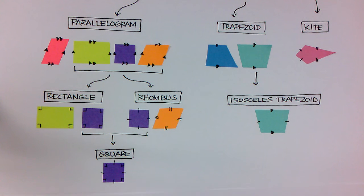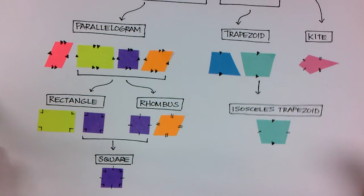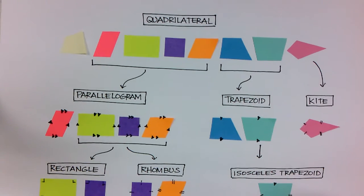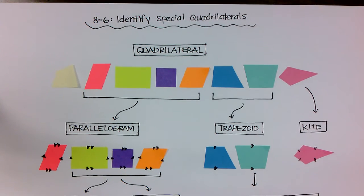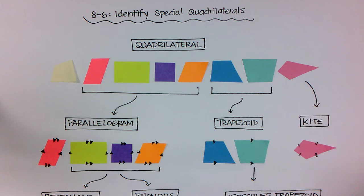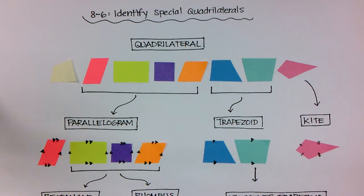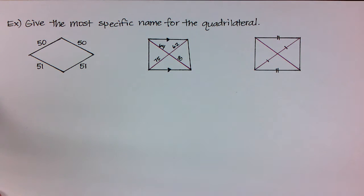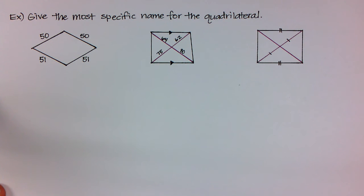So in this lesson, this is basically what we're going to be doing is taking all this knowledge of these different types of quadrilaterals and putting them together to determine just a more specific way of classifying any quadrilateral. So I have three examples for us just to look at and then we're going to be done.